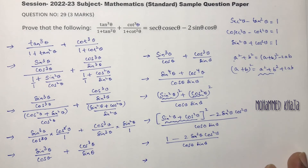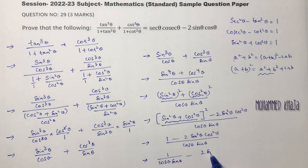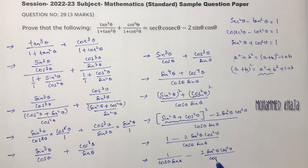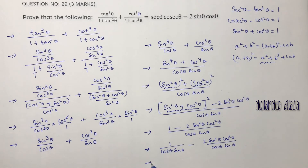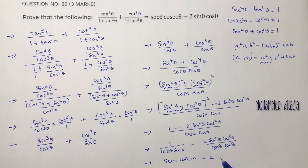Splitting the fraction: 1 by cos theta sin theta minus 2 sin square theta cos square theta by cos theta sin theta. Now 1 by cos theta is sec theta and 1 by sin theta is cosec theta, giving sec theta cosec theta. For the second term, one cos cancels and one sin cancels, leaving minus 2 sin theta cos theta. So we get sec theta cosec theta minus 2 sin theta cos theta, which equals RHS. Hence proved.